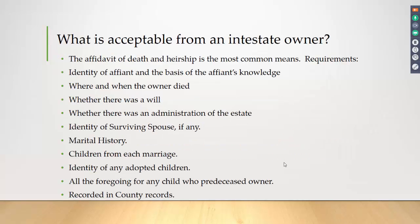Sticking with the intestate owner, what do you do? The most common means is the affidavit of death and heirship. These have hard requirements that all need to be addressed: who is the affiant, what is the basis of their knowledge — this is important because if you have an interested party, or someone who clearly could never have known the decedent based on the date of death, they may not be very credible. Lack of credibility alone is not enough to dishonor one, but it should go into consideration as to whether you want more proof of death and heirship.